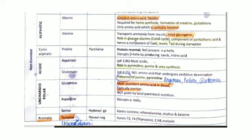Acidic amino acids are glutamate and aspartate. These acidic amino acids are associated with purine synthesis, pyrimidine formation, and urea synthesis. Glutamate is a precursor of purines and pyrimidines. Aspartate is the most acidic amino acid and has a role in pyrimidine, purine, and urea synthesis.